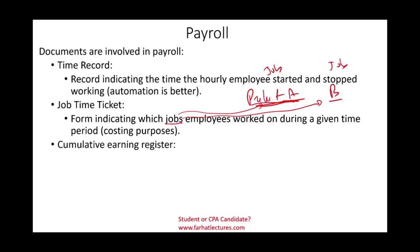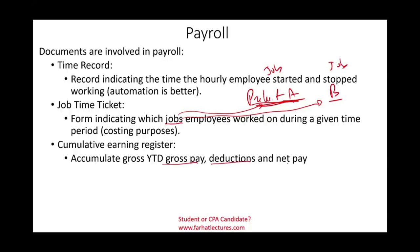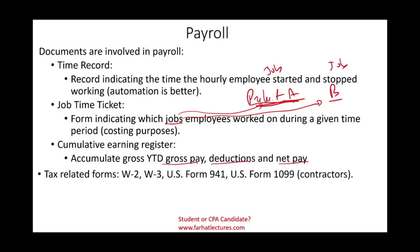Companies also keep a cumulative earnings register showing year-to-date gross pay, deductions, and net pay. Tax-related forms include the W-2, which employees receive at year end showing total pay, deductions, and net pay for completing their taxes. The W-3 is a summary of all W-2s sent to the government. Companies must also file Form 941 quarterly for payroll taxes, and issue Form 1099 for contractors.